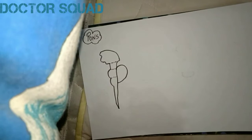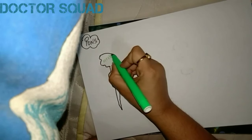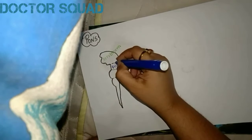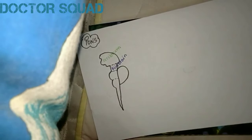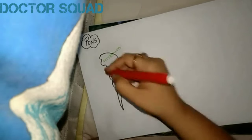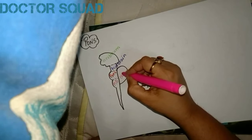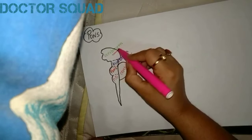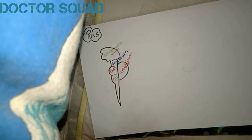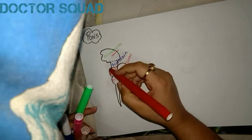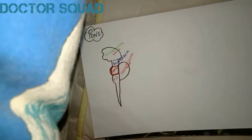Here is a diagram of the brain. This part is known as the cerebrum, this is the midbrain, this is the pons, this is the medulla oblongata, and this is the cerebellum. Don't confuse the cerebrum with the cerebellum. Today we will talk about this portion, which is known as pons.